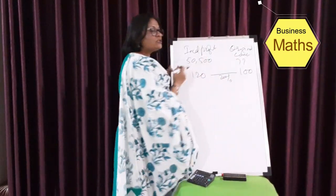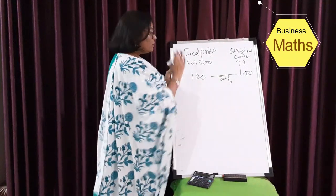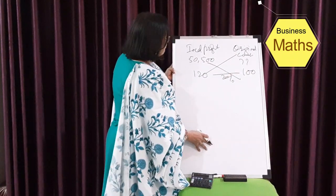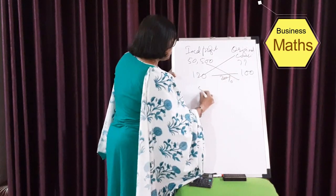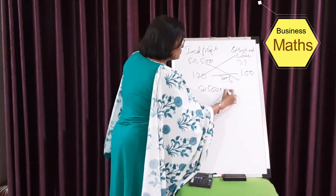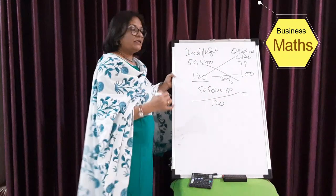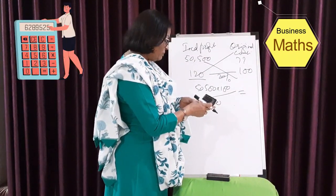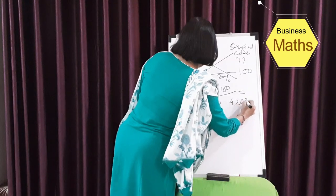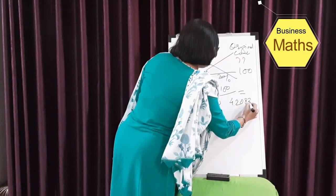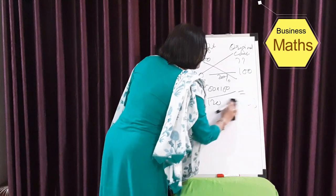If you place figures incorrectly or criss-cross them, your calculations will be wrong and your entire business calculations could be off. So cross-multiply: 50,500 × 100 ÷ 120. Your answer — the basic cost of the product before 20% profit — is 42,083.33.